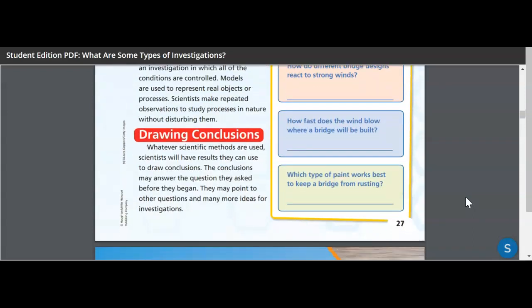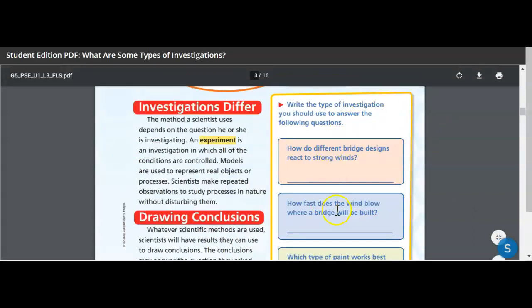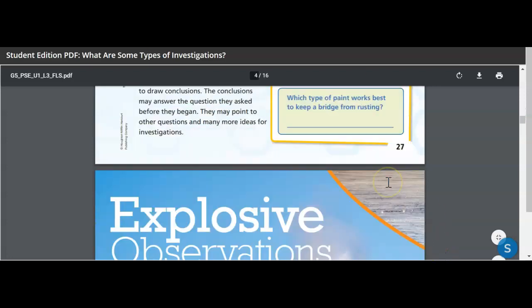So we're moving on to drawing conclusions. When scientific methods are used, scientists will have results they can use to draw conclusions. The conclusions may answer the question they asked before they began. So the conclusions might answer the question that they started out with. They may point to other questions in the end. So you could either have your question answered by the experiment or it might lead to more questions and more research, which often happens. This is also a section you guys are going to fill out as well on page 27.